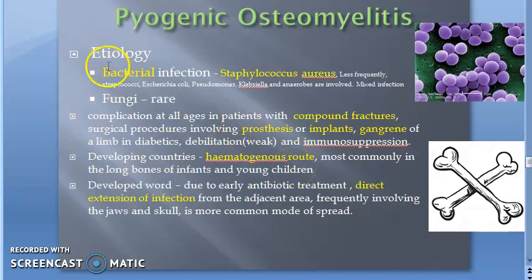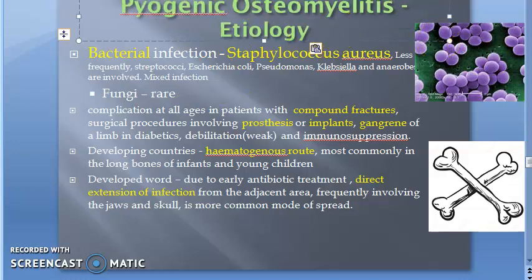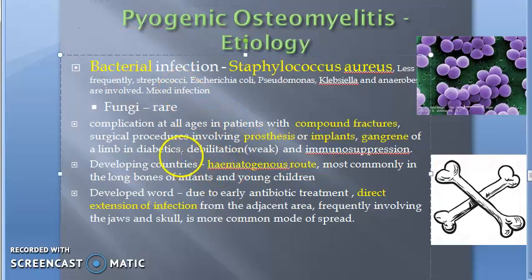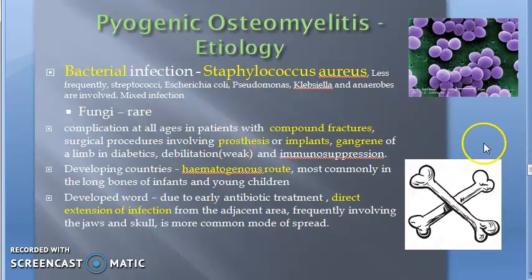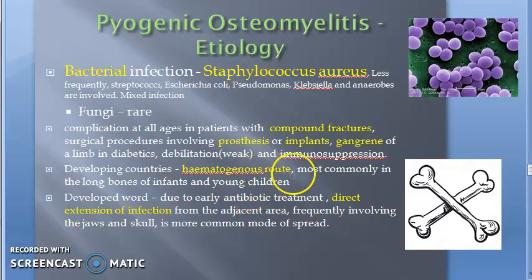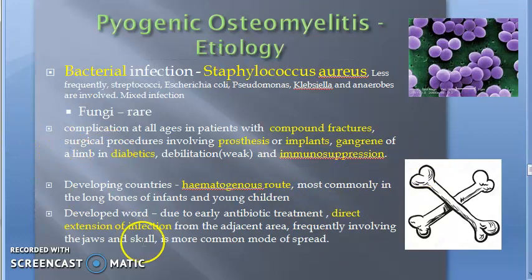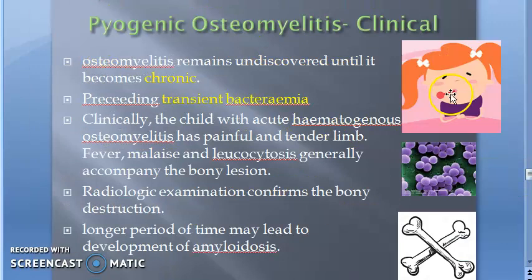To summarize the etiology of osteomyelitis: it is usually a bacterial infection, most commonly Staphylococcus aureus; fungi are rare; streptococcus is less frequent. It can be a complication of a compound fracture, an implant or surgical prosthesis, gangrene in diabetic patients, or immunosuppression. Spread can be via blood (hematogenous) or by direct extension of infection. Clinical features of pyogenic osteomyelitis will be covered in the next video.